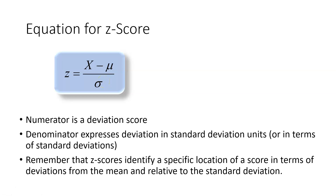Remember that z-scores identify a specific location of a score in terms of deviations from the mean, relative to the standard deviation. So it's taking the original score and telling us how far it is from the mean in terms of standard deviations.